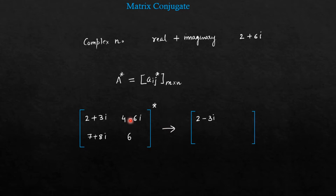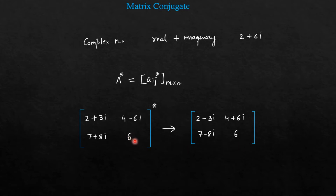Here it was 2 plus 3 iota — the plus sign will be reversed, so it will become 2 minus 3 iota. In the same way, 4 minus 6 iota will become 4 plus 6 iota while taking the conjugate. Similarly, 7 plus 8 iota will become 7 minus 8 iota. And 6 will remain as it is, because 6 does not contain any imaginary part. Suppose we have a number 3, which is a real number — if you take the conjugate, it will remain as it is because there will be no sign change.